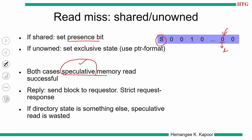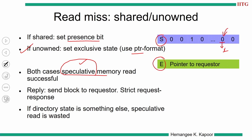In case the state is unowned, there are no sharers. We are going to use the pointer format and make the directory state exclusive because exactly one sharer is there, and put a pointer to the requester. This pointer points to the processor; the bit vector bits point to the nodes. Once we have done this, we send a reply — that is, send the data block to the requester using a strict request-response manner because there is no intervention to be done in this case. The speculative data gets transferred always and it is up to the requester to either use it or not depending on the situation.